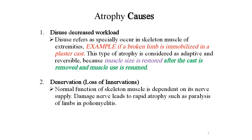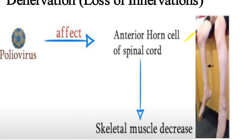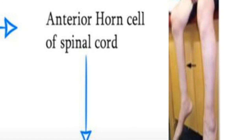Denervation — loss of innervation: normal function of skeletal muscles is dependent on its nerve supply. Damaged nerve leads to rapid atrophy, such as paralysis of limbs in poliomyelitis. Nerve supply damage hone se rapid atrophy hoti hai — jaise polio virus se affected hone par spinal cord cells ka size chota ho jaata hai aur functional ability bhi chali jaati hai.